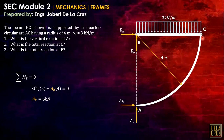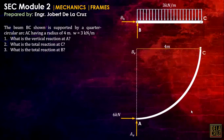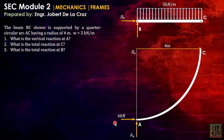Since this is a frame, we use the isolation technique — isolate per member. Member BC and member AC are isolated separately. Since AV is what we want first, we isolate member AC and take moment at C to calculate AV.